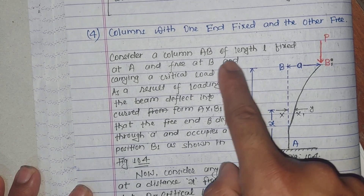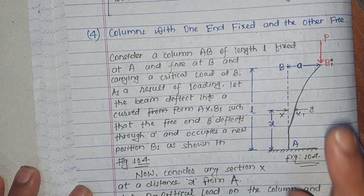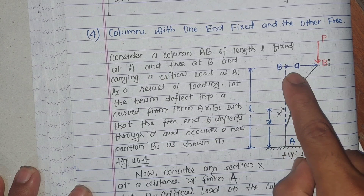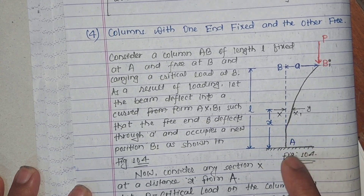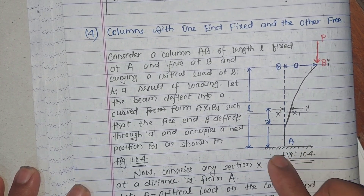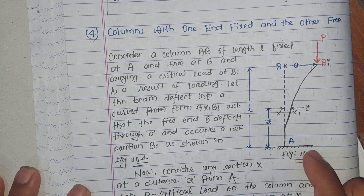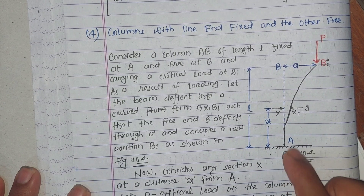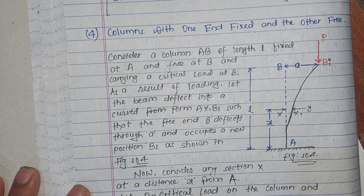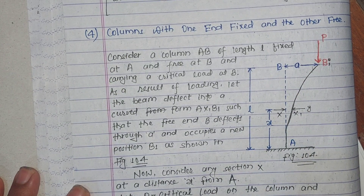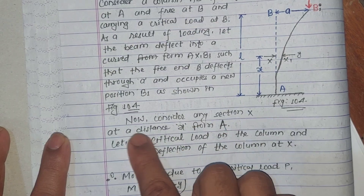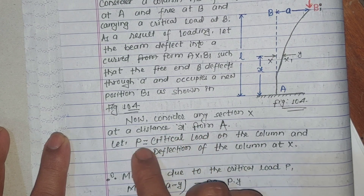Consider column AB of length L, fixed at A and free at B. Now consider any section X at a distance X from A.